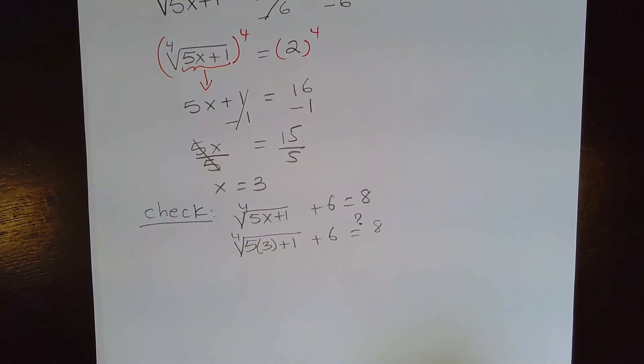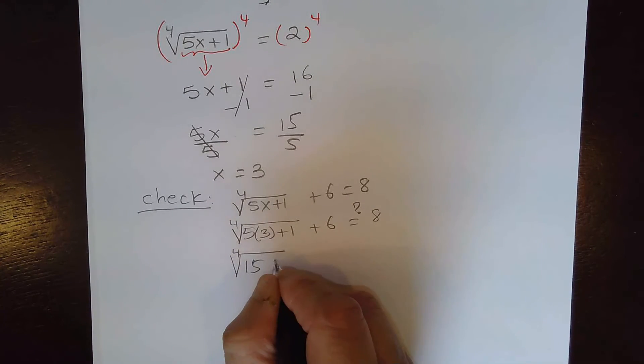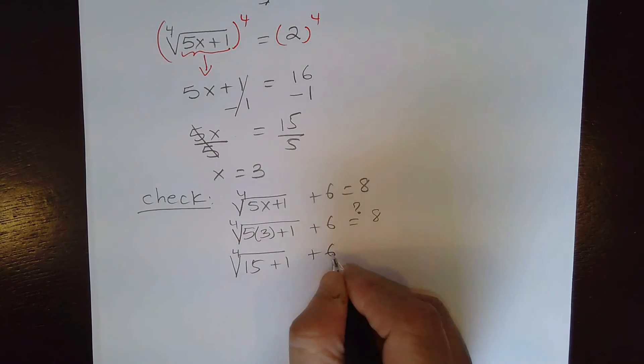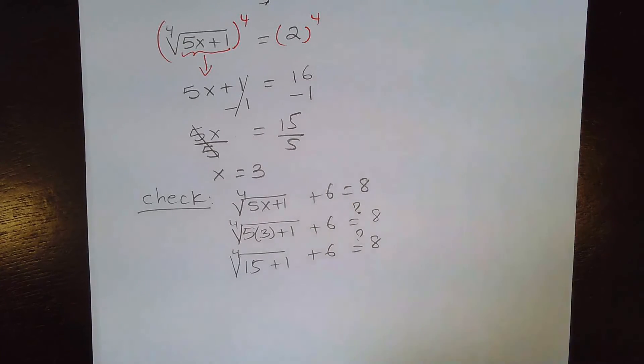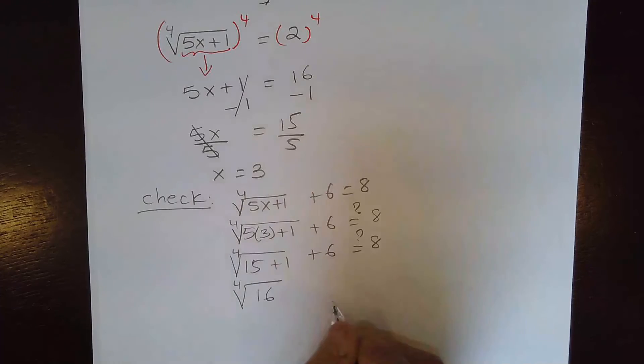So the 4th root of 5 times 3, that's 15 plus 1 plus 6. Is this equal to 8? So let's see. That's the 4th root of 15 plus 1, that's 16 plus 6. Is this equal to 8?